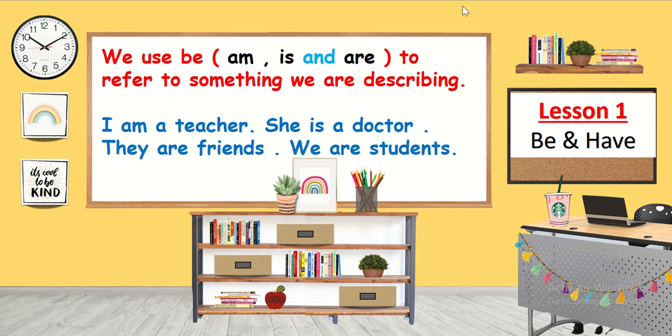Hi students, let's start our lesson today. Our lesson is about grammar — we will talk about 'be' and 'have'. We use 'be': am, is, and are, to refer to something we are describing. For example: I am a teacher.